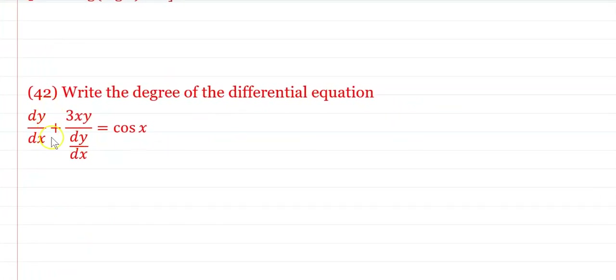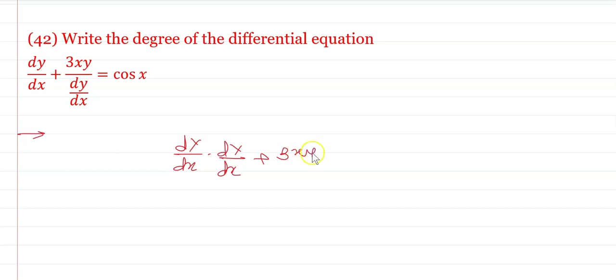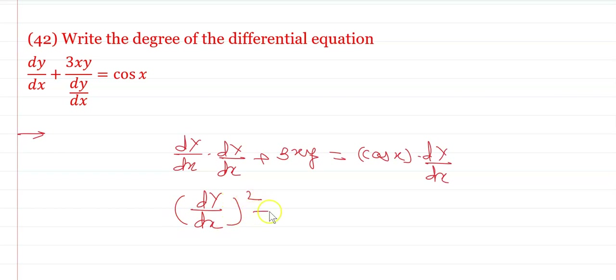Write the degree of the differential equation dy/dx + 3xy/(dy/dx) = cos x. Multiplying through by dy/dx: (dy/dx)² + 3xy = cos x · (dy/dx). The highest order derivative is dy/dx with power 2. Therefore the degree of the differential equation is 2.